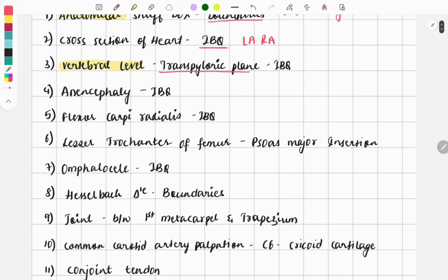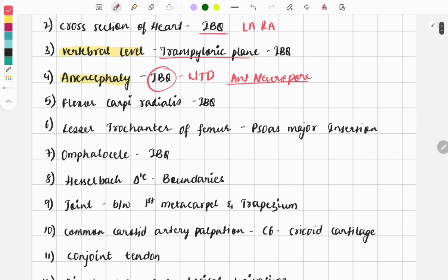The next image: anencephaly, which is a neural tube defect. The image was given and asked that anencephaly occurs due to defect in the closure of the anterior neuropore. Whenever the anterior neuropore does not close properly, we can see anencephaly. Neural tube defect is also a very important topic—either anencephaly will be asked or spina bifida, meningomyelocele.